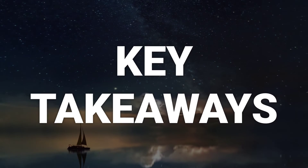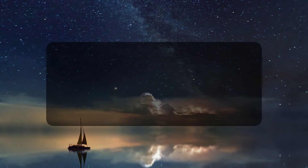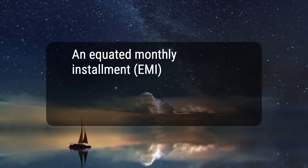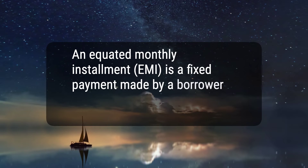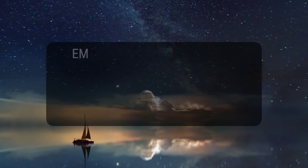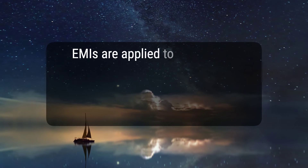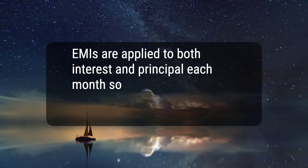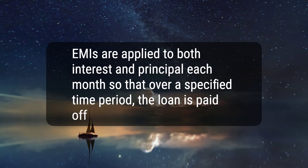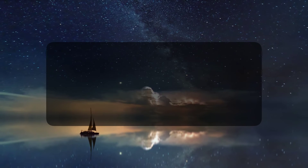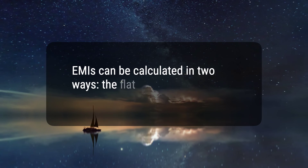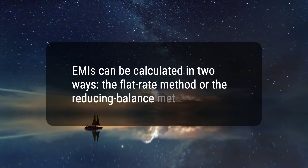Here are five key takeaways. 1. An equated monthly installment, EMI, is a fixed payment made by a borrower to a lender on a specified date of each month. 2. EMIs are applied to both interest and principal each month so that over a specified time period, the loan is paid off in full. 3. EMIs can be calculated in two ways: the flat rate method or the reducing balance method.